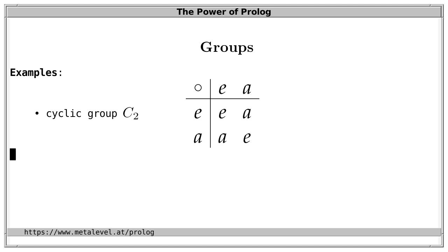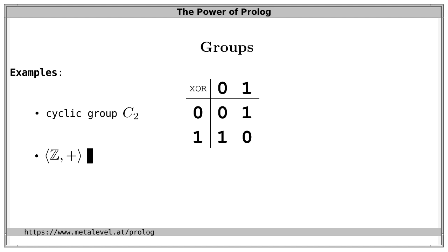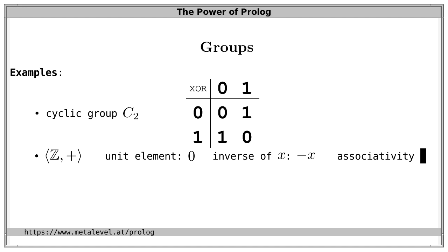You may even know this group already, because this is essentially the operation exclusive OR on the boolean values 0 and 1. So true and false, together with exclusive OR, form a group. As another example, the integers together with addition are also a group. Clearly, there is a left unit element, namely 0; every element X has an inverse element, namely negative X; and addition is also associative.